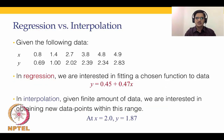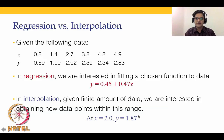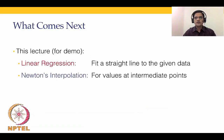In regression we are interested in fitting a chosen function to the data. For example, the function might end up being y = 0.45 + 0.47x. In interpolation, given a finite amount of data, we are interested in obtaining new data points within the range — for example, within the range of 0.8 to 4.9. So if you query at x = 2.0, what is the probable value of y? Using the interpolant, the value of y would be 1.87.